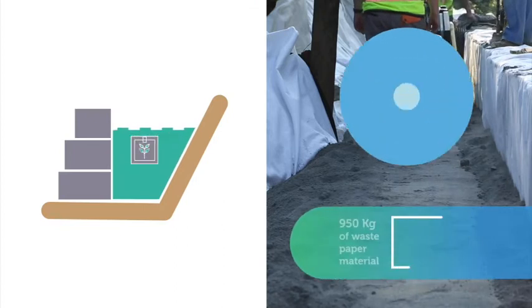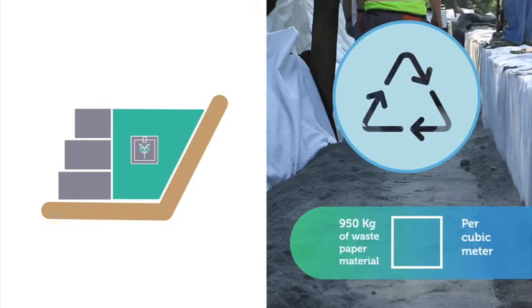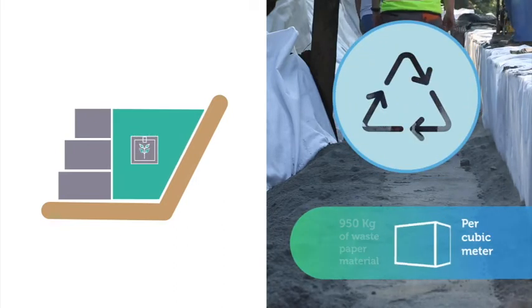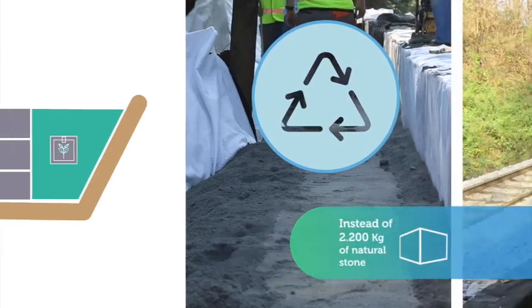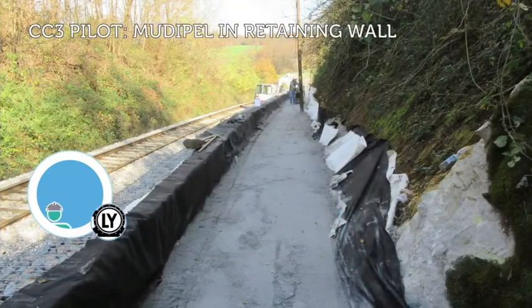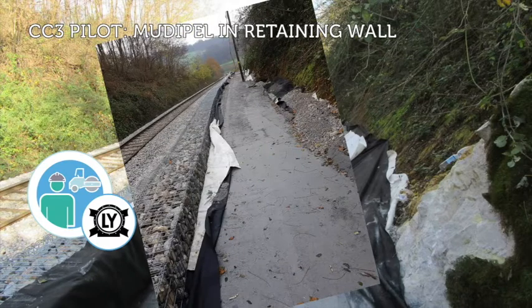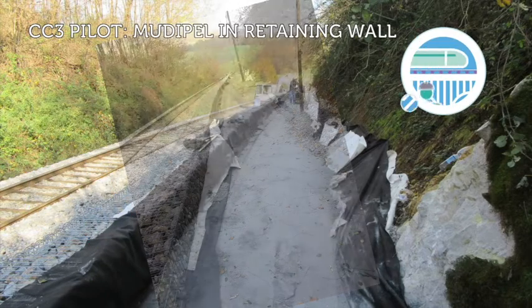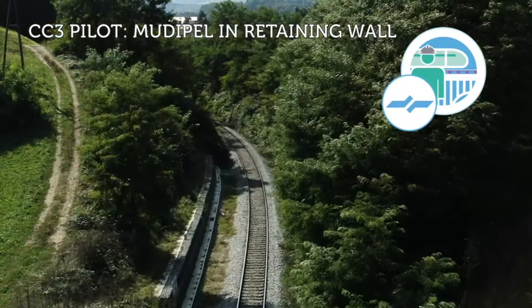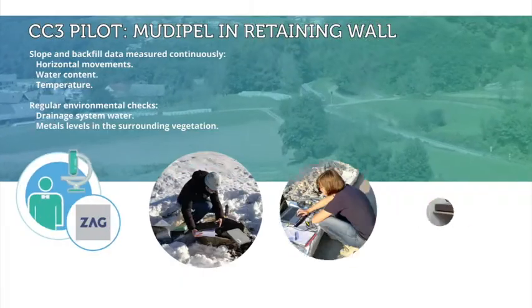This not only means a higher percentage of paper waste recycled, it also lessens the amount of natural resources consumed. This project pilot takes place in a section of the Slovenian railway. After the installation, the composite is monitored to test its endurance to weather, groundwater and pressure.